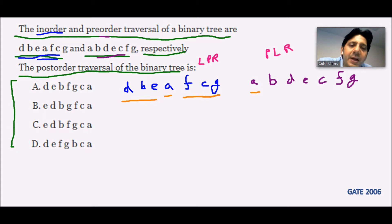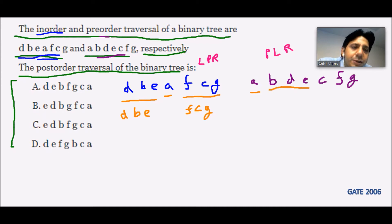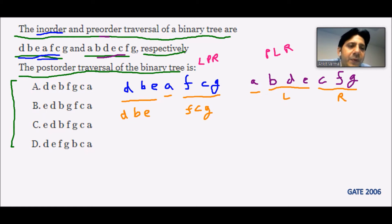A will be the root node. Everything to the left of A in the in-order — D B E — becomes the left subtree, and F C G becomes the right subtree. Matching with the pre-order: D B E matches the left subtree, and C F G matches the right subtree.